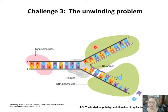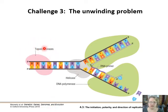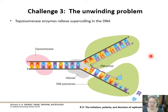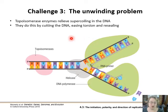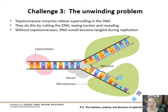Challenge three is the unwinding problem. The DNA helix is not just two straight lines — it's quite coiled. Topoisomerases come in to reduce the tension in the DNA strand ahead of the replication fork, relieving the supercoiling. They actually cut the DNA open and then reseal it in order to do this. If you knock out the gene for topoisomerases, cells cannot duplicate their DNA due to the tangling.